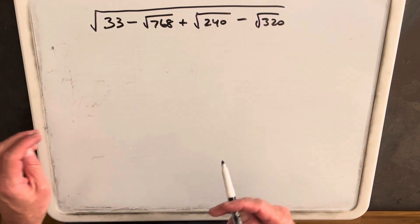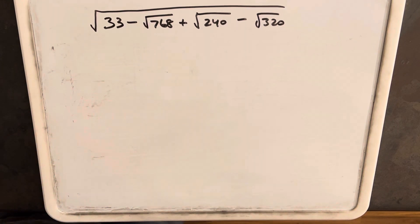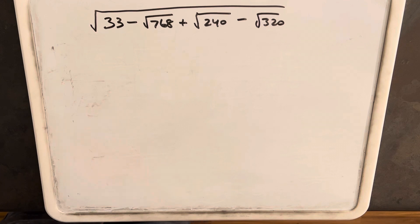We have an interesting and complicated looking radical on the board: the square root of 33 minus the square root of 768, plus the square root of 240, minus the square root of 320.